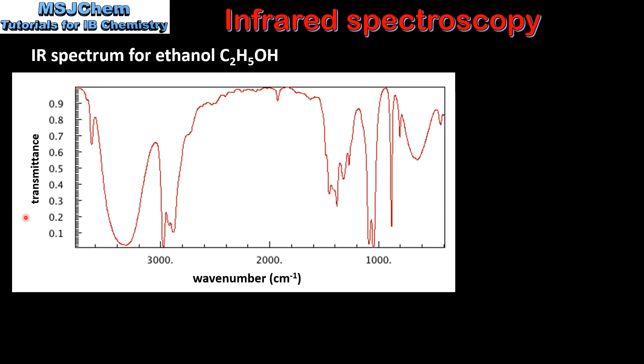Here we have an example of an infrared spectrum, this one being for ethanol. On the y-axis we have transmittance, on the x-axis we have wave number.